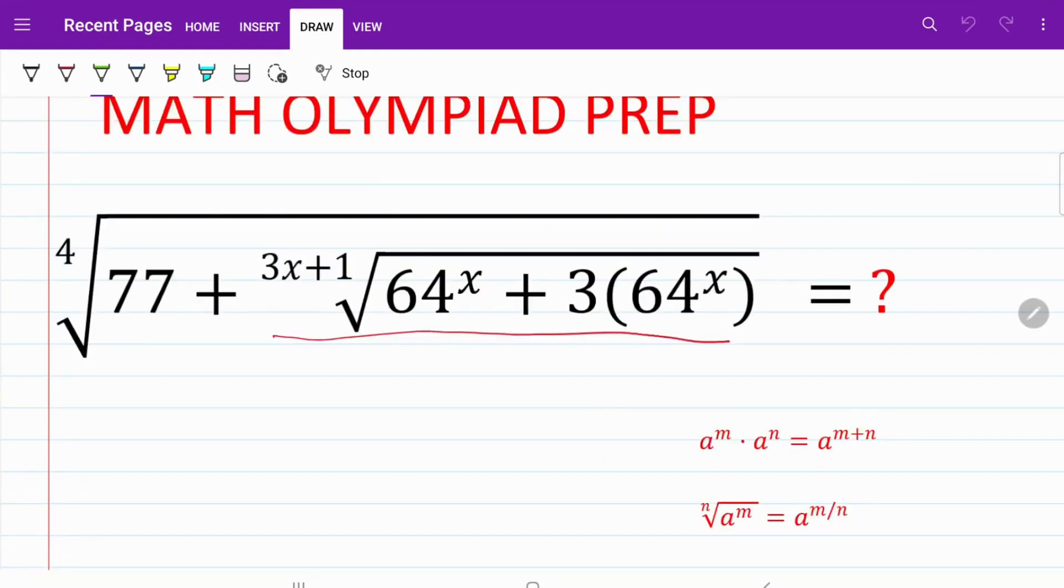Let's briefly run through these two formulas that we are going to be relying on. I have rule number one: a to the power of m multiplied by a to the power of n can be expressed as a to the power of m plus n.